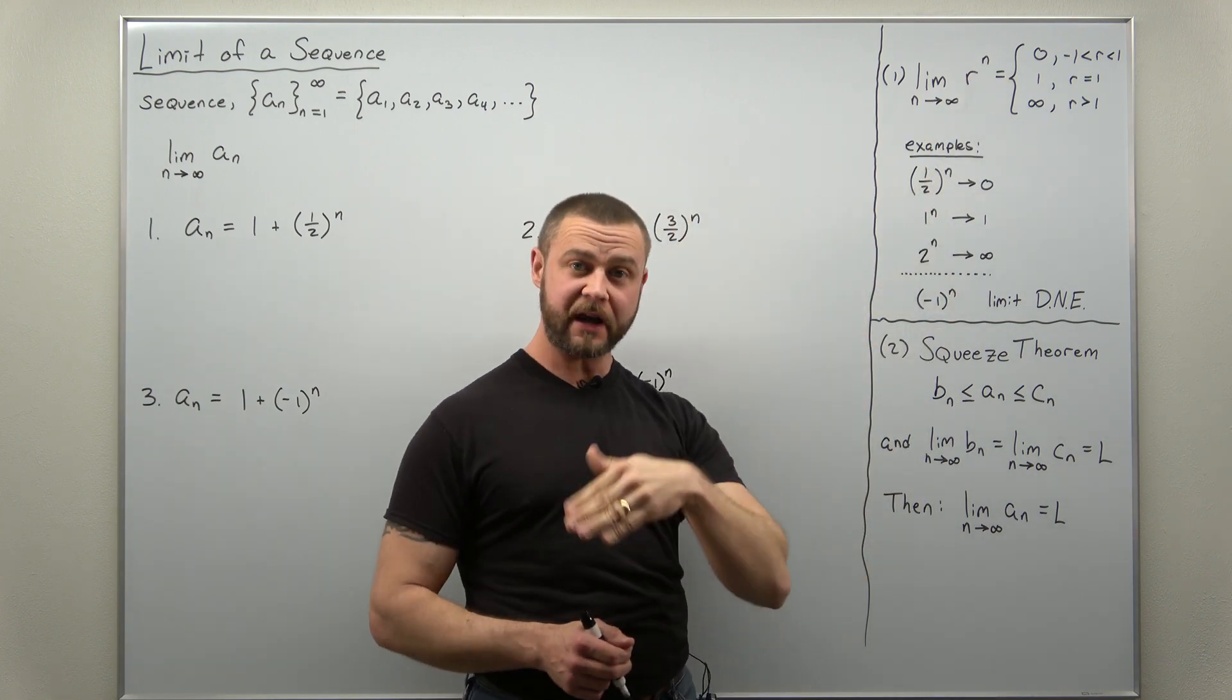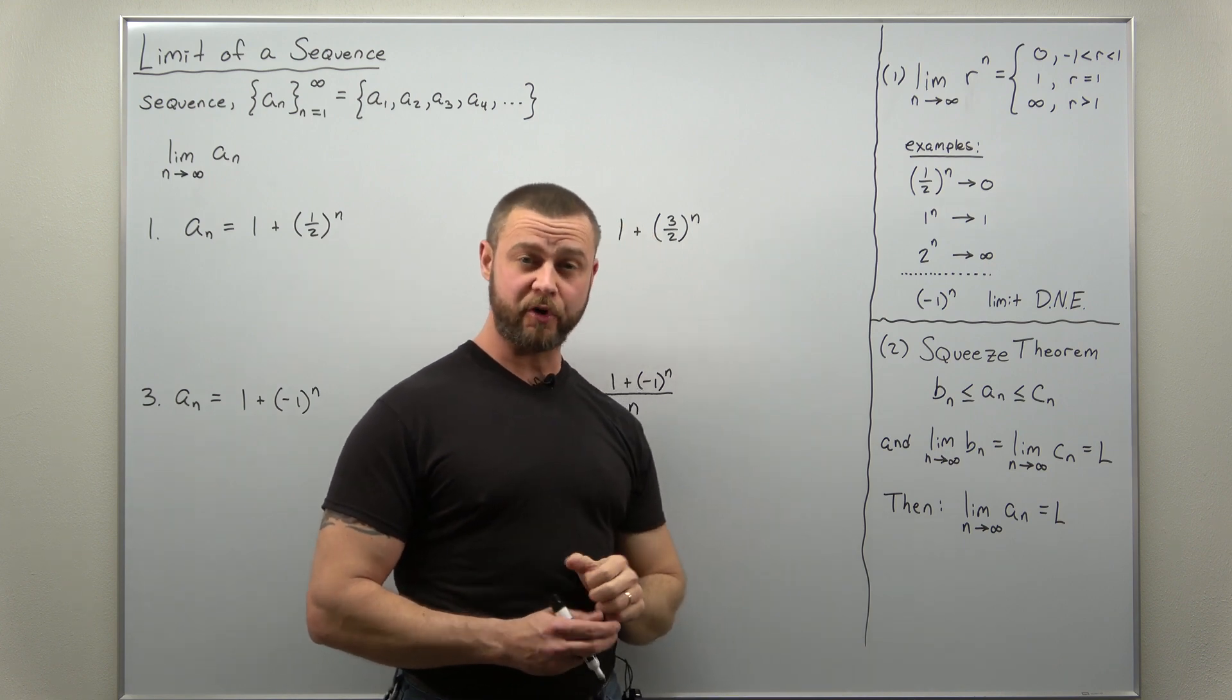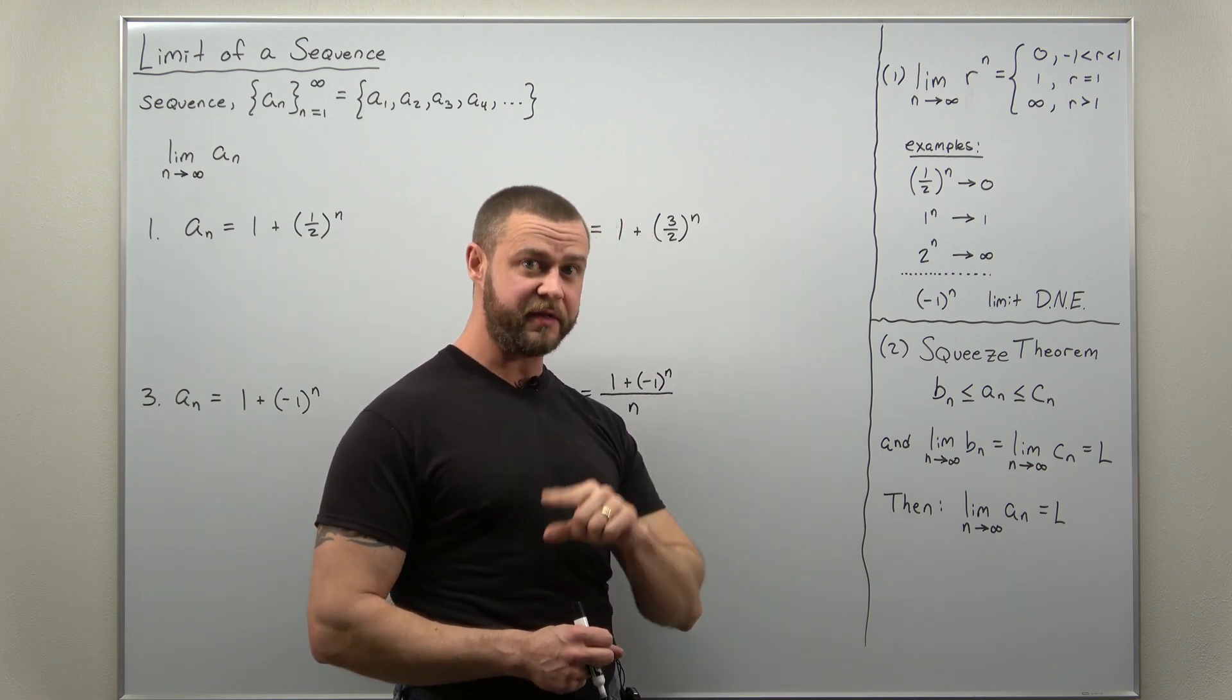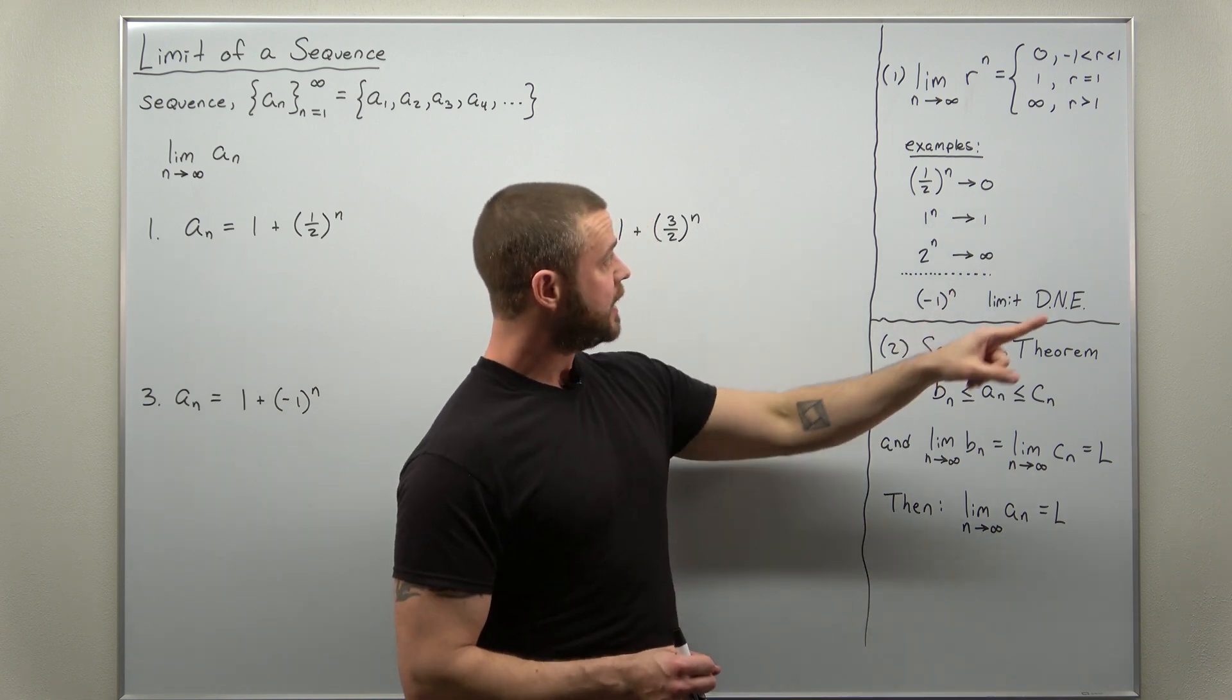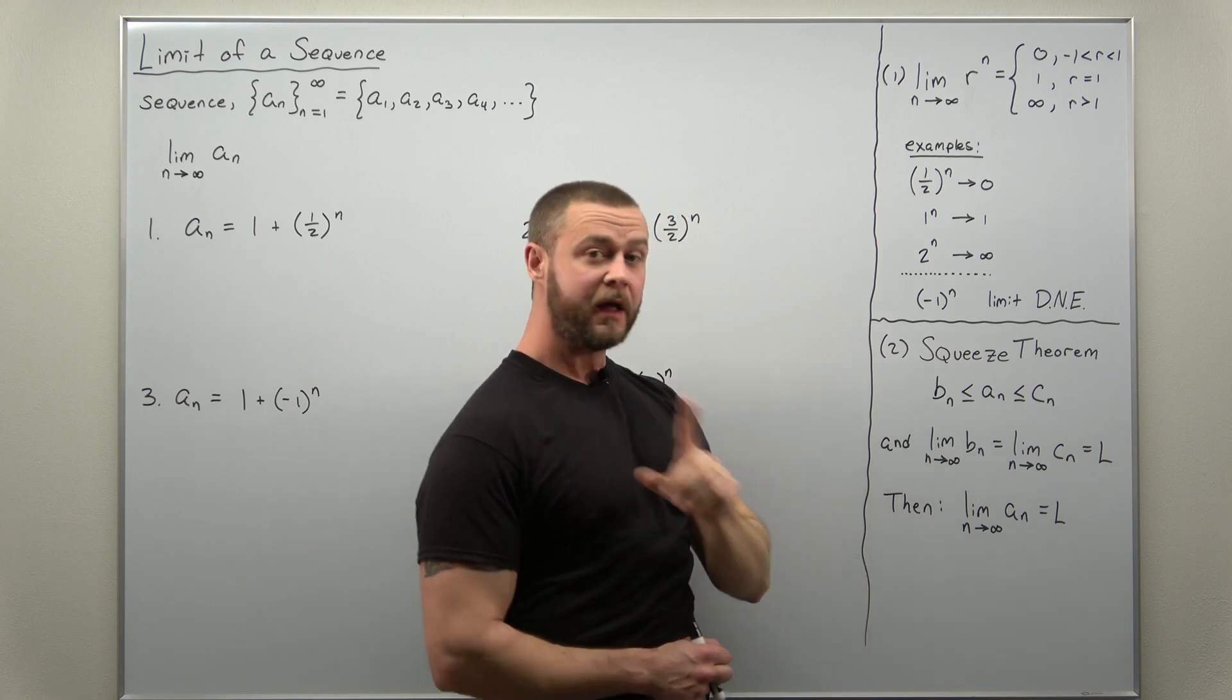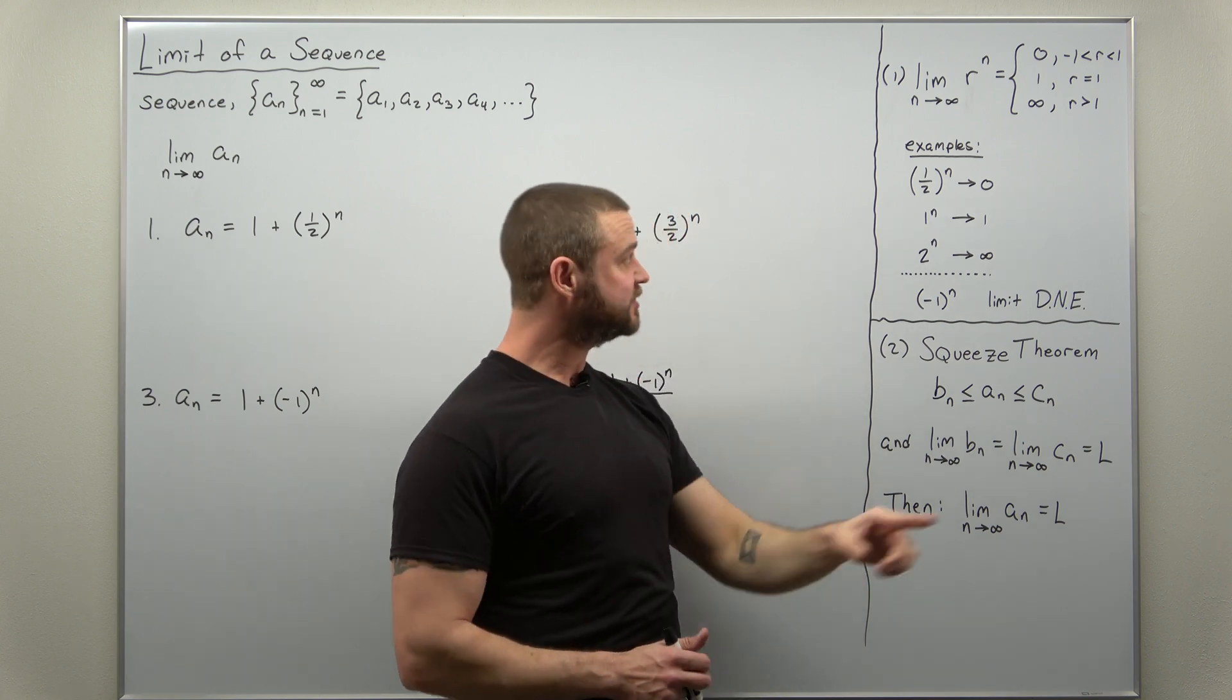And keep in mind here, n is your index for the sequence, which is going to approach infinity. Now there's a few possibilities here depending on the value of r. And depending on the value of r, we get three different possibilities here. I like to point this out first with some examples.